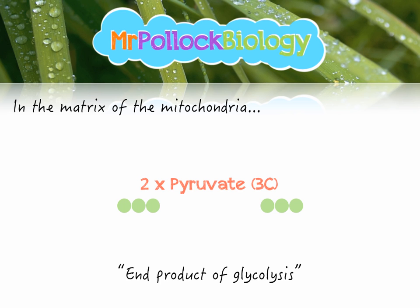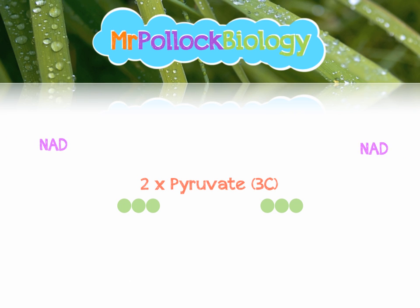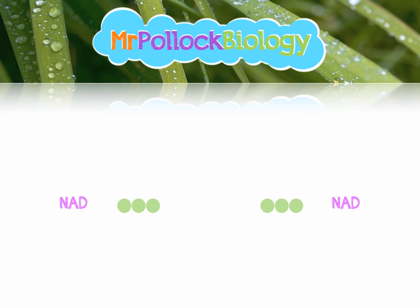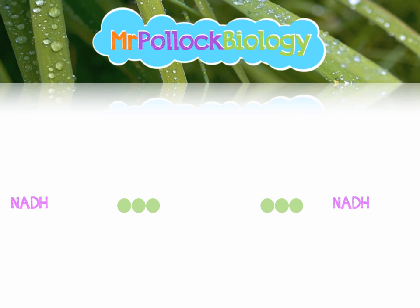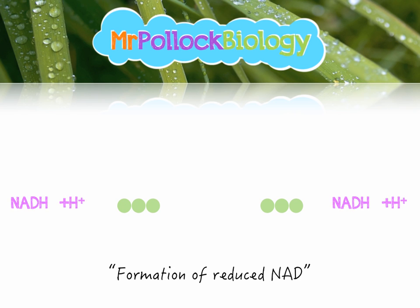In the link reaction, our old friend NAD comes in and removes hydrogen from pyruvate — this is the oxidation of pyruvate. When pyruvate is oxidized, NAD is reduced to NADH in a redox reaction. We also get the formation of protons, which are really important when we look later at the electron transport chain.